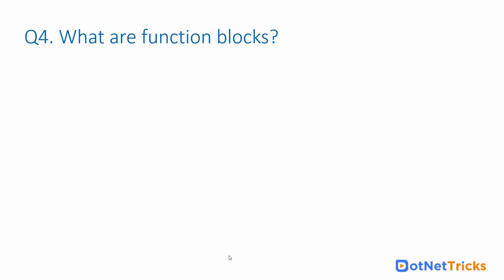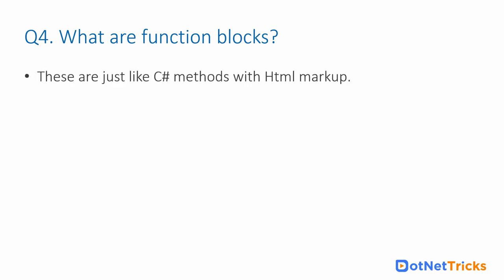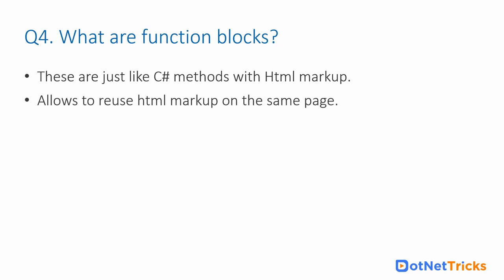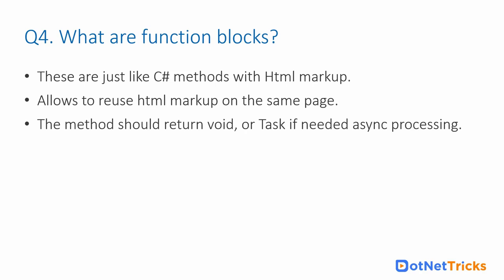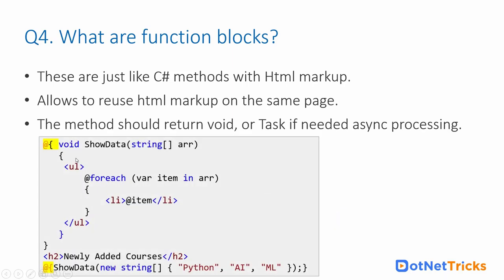The next question is: what are function blocks? In ASP.NET Core, function blocks are the alternative to inline helpers from ASP.NET MVC5. Function blocks are C# methods that write HTML markup for reuse on the same page. They must have a return type of void and should be made async where possible. They help reuse HTML markup at more than one place on the same Razor page.